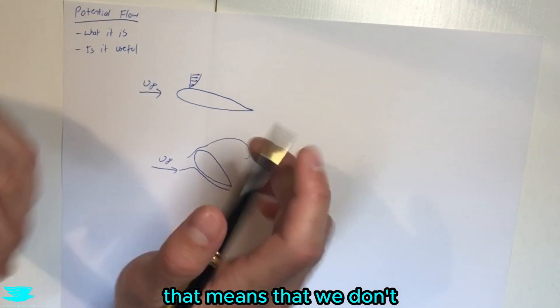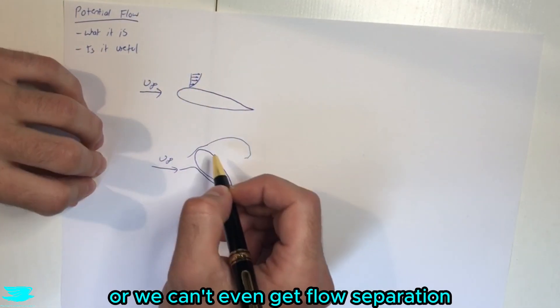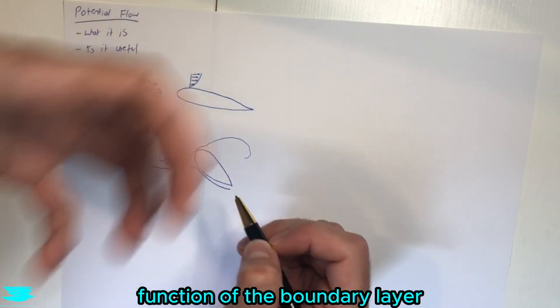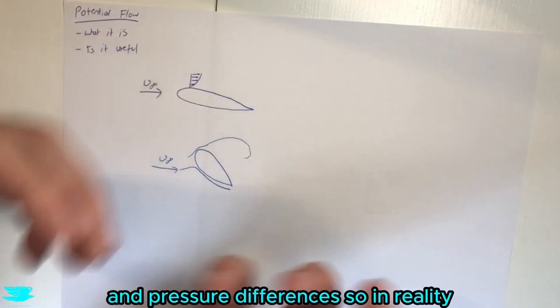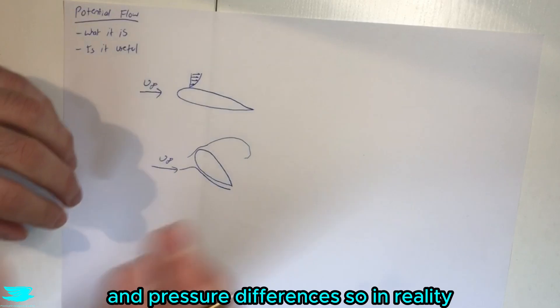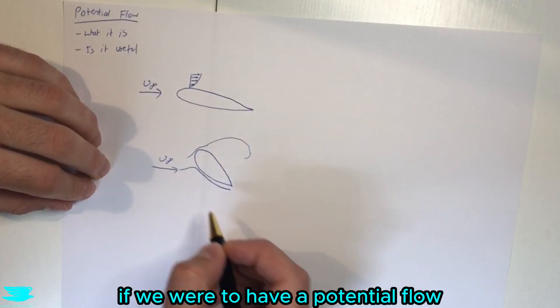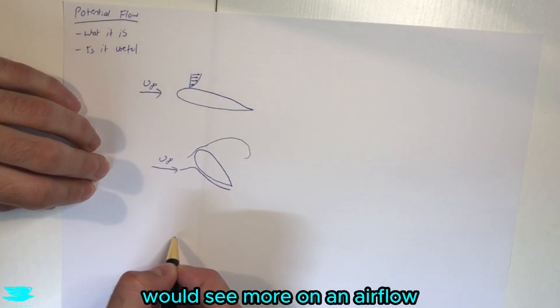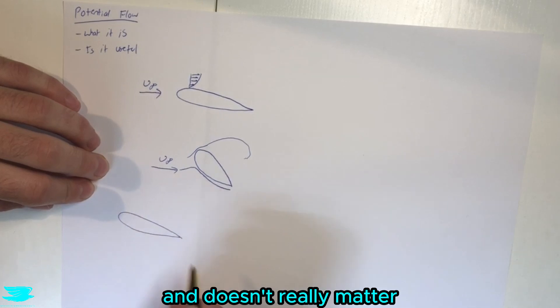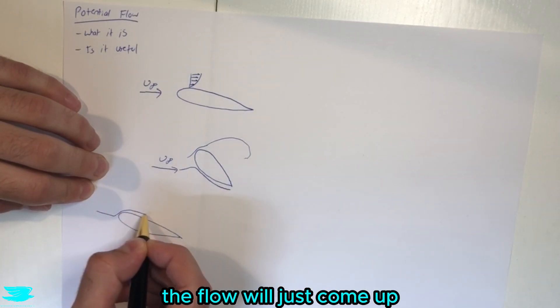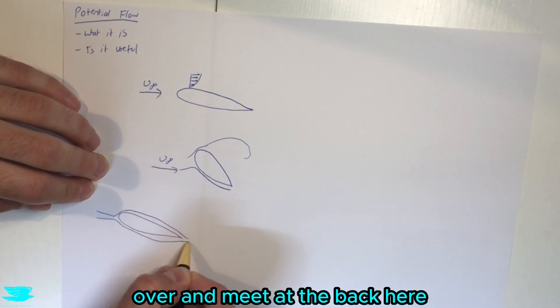So that means that we don't get boundary layers forming, or we can't even get flow separation because flow separation is really a function of the boundary layer and pressure differences. So in reality, if we were to have a potential flow we wouldn't see anything like this. We'd see an airfoil - and it doesn't really matter what angle of attack it is - the flow would just come up over and meet at the back here.